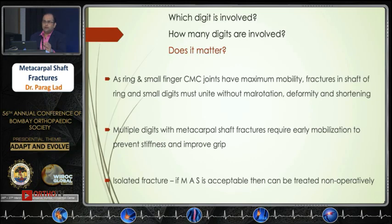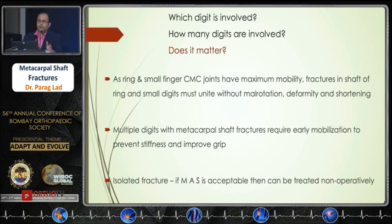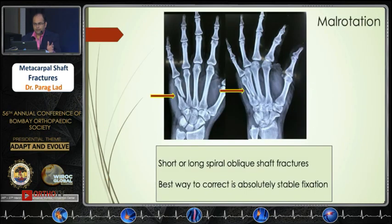If there is an isolated fracture with malrotation, angulation deformity, and shortening that is acceptable, it can be treated non-operatively. Let us take one example of these three problems in the metacarpal shaft fracture.